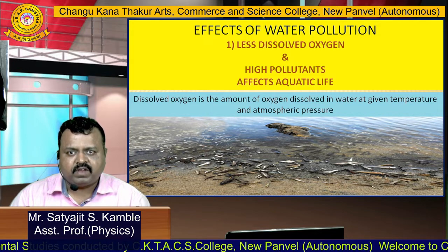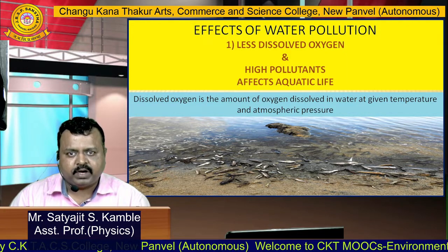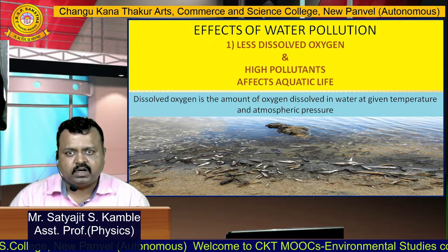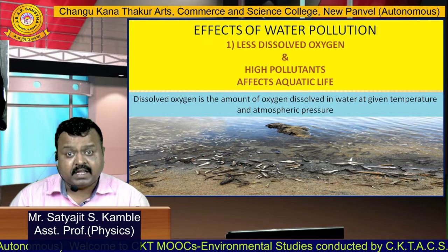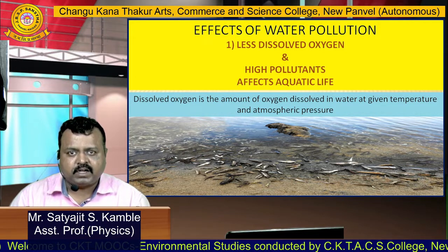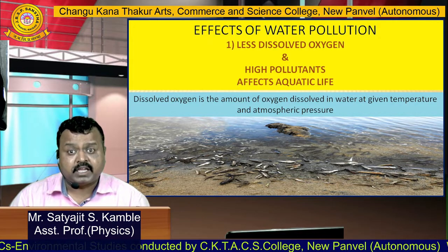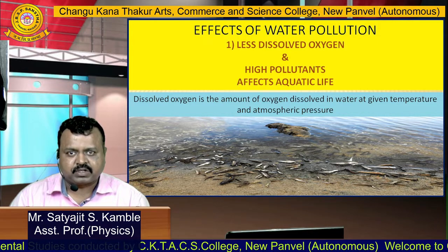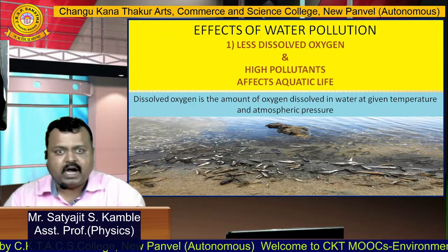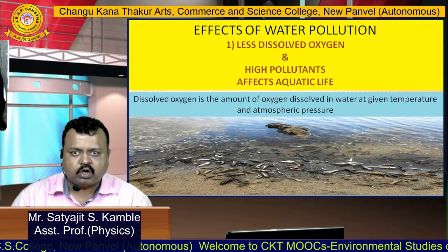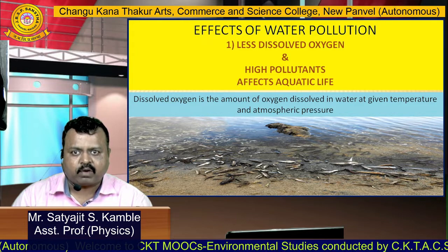Water pollution can have a number of effects. The first effect is less dissolved oxygen. Whenever water is polluted, the amount of oxygen dissolved in water goes down. Dissolved oxygen is the amount of oxygen dissolved in water at a given temperature and atmospheric pressure. In healthy water, dissolved oxygen is high; in unhealthy water, it is low. Less oxygen and high pollutants can lead to the death of aquatic species.